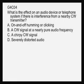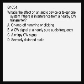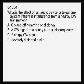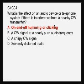What's the effect on an audio device or telephone system if there is interference from a nearby CW transmitter? CW is turning the radio frequency carrier off and on to make Morse code, and in that case your interference will be a humming or a clicking sound in your audio device.